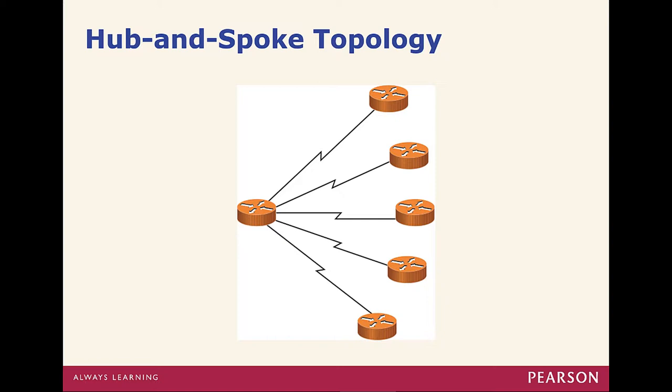Hub and spoke. We have one centralized device, and then we have hubs coming off of that. Like a hub and spoke wheel.